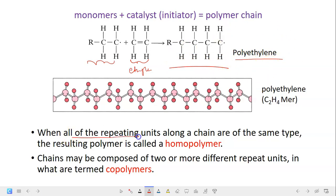When all of the repeat units along a chain are of the same type, the resulting polymer is called a homopolymer. So if we have the same repeat units, it's a homopolymer. But if the chains are composed of two or different repeat units, we call it as copolymers. We will look into this in detail later.